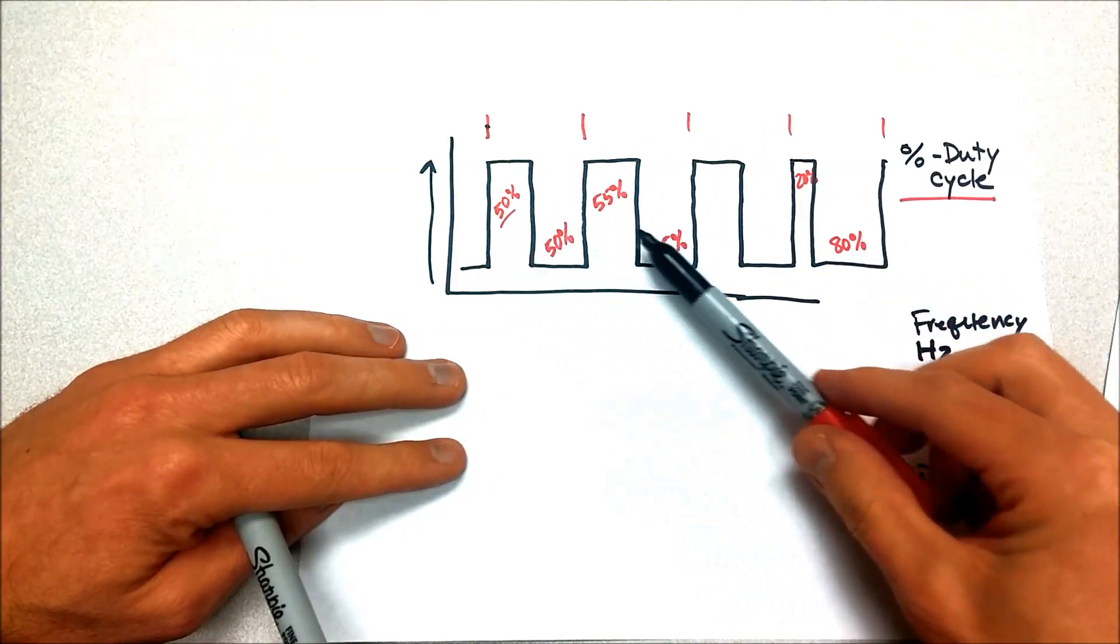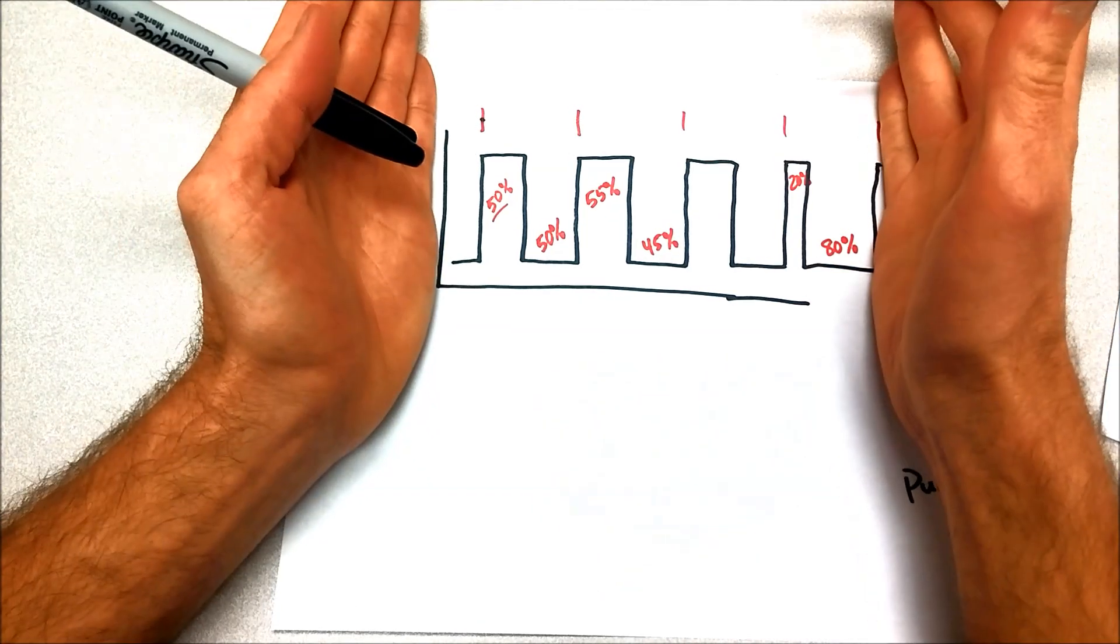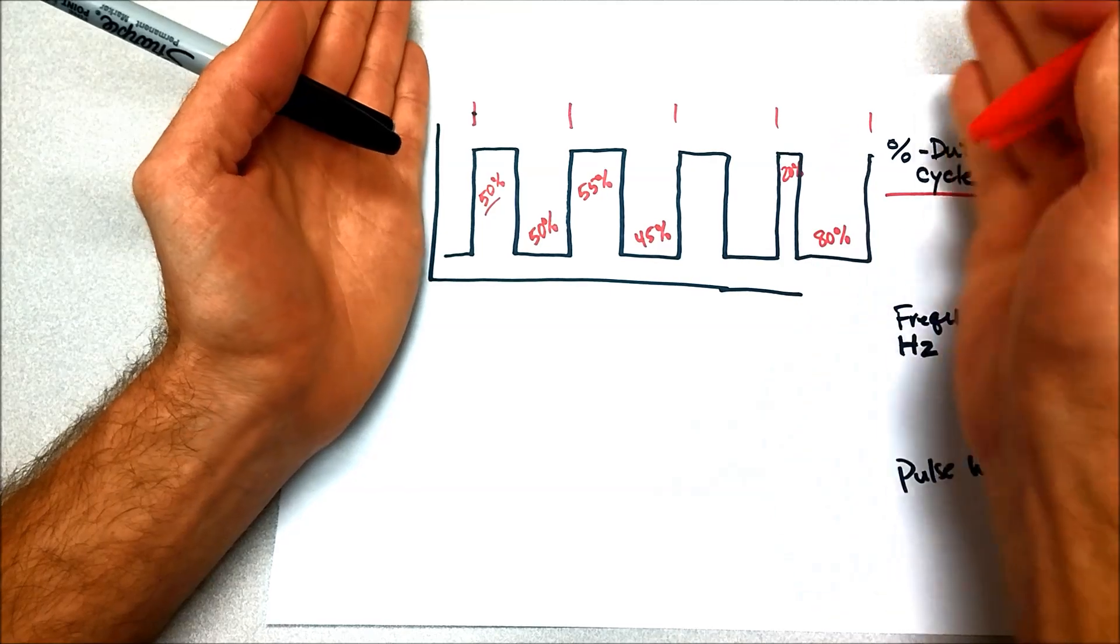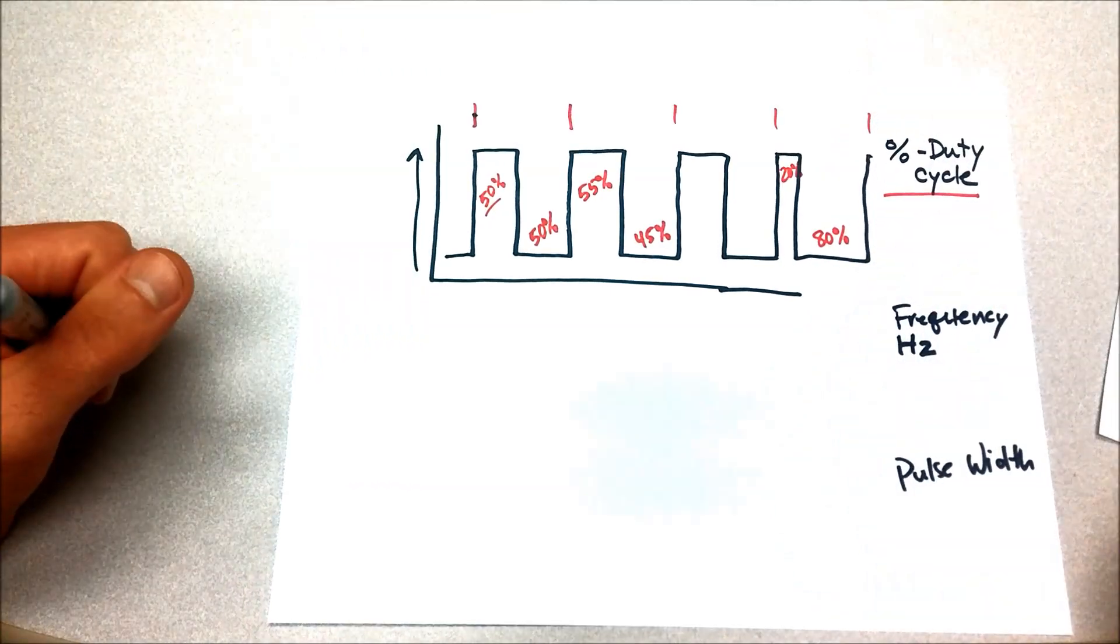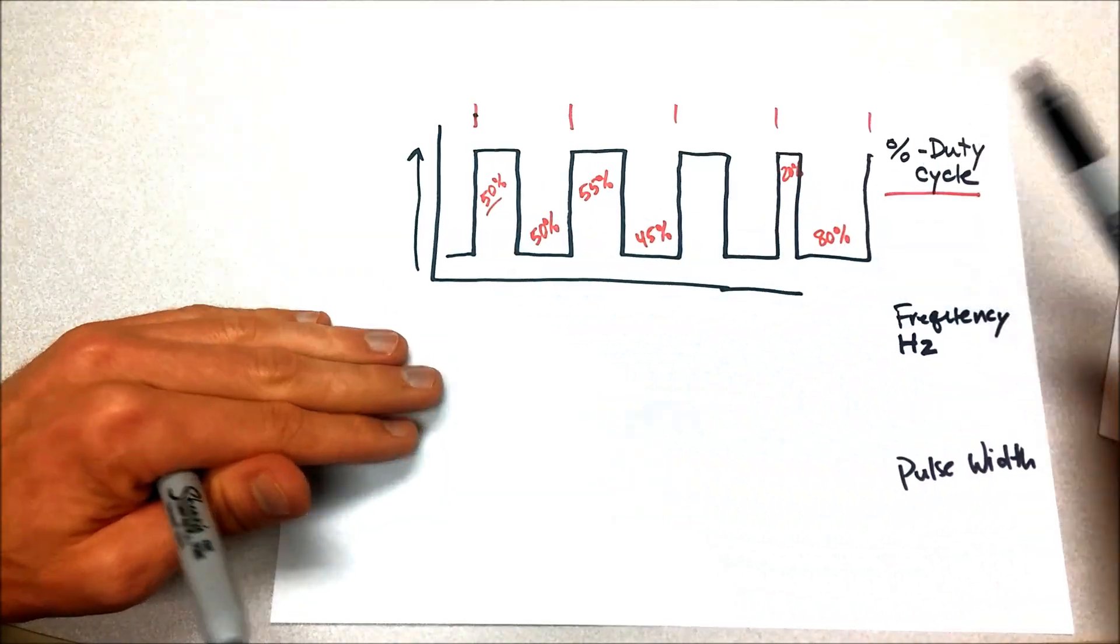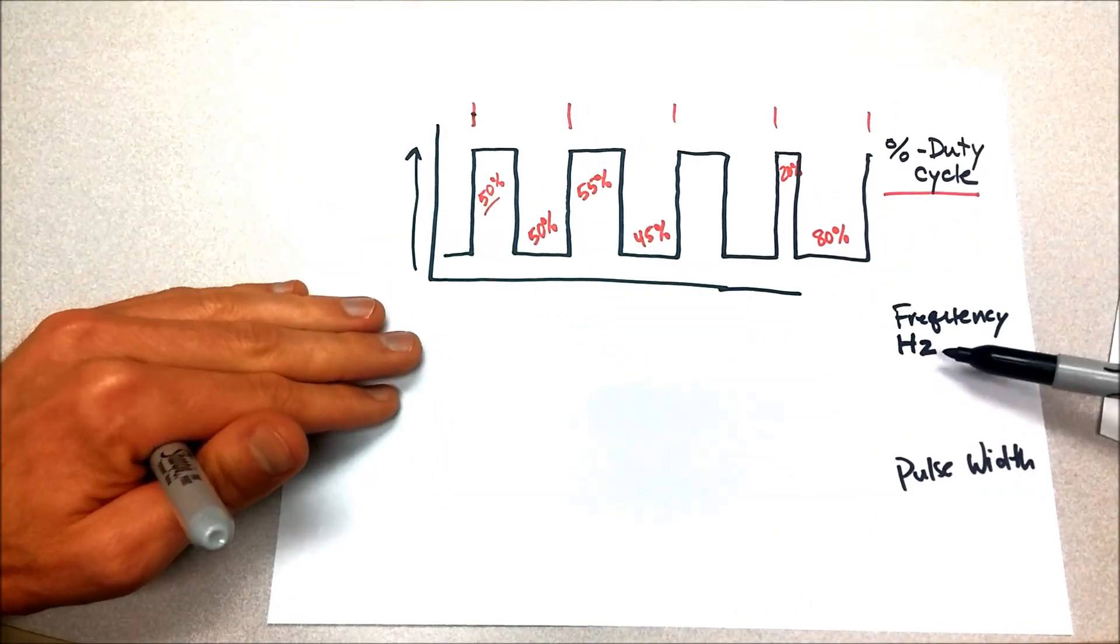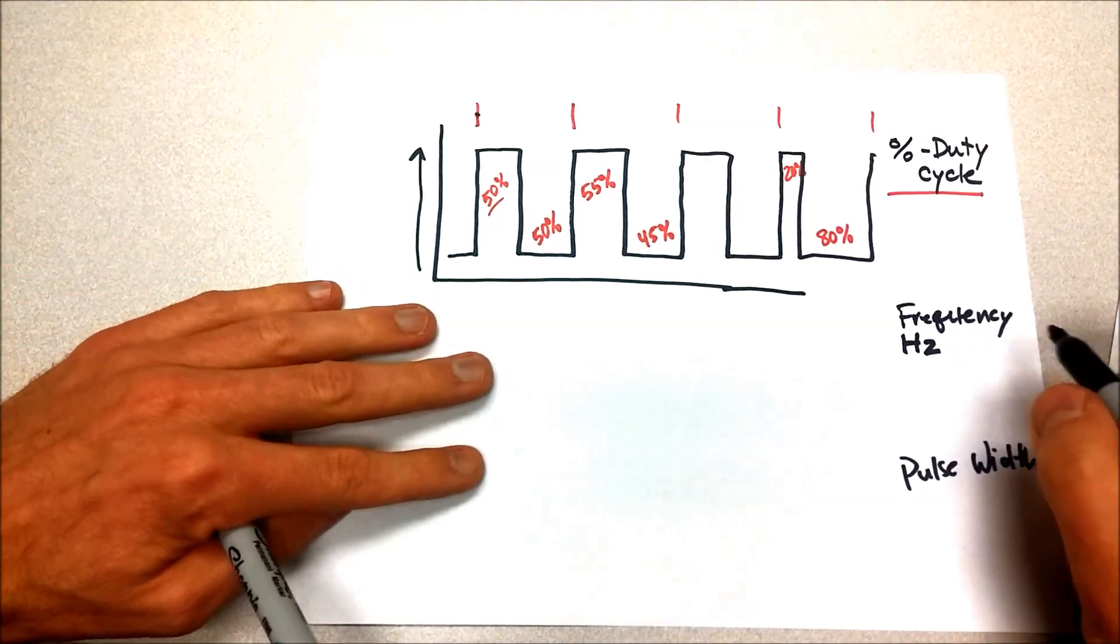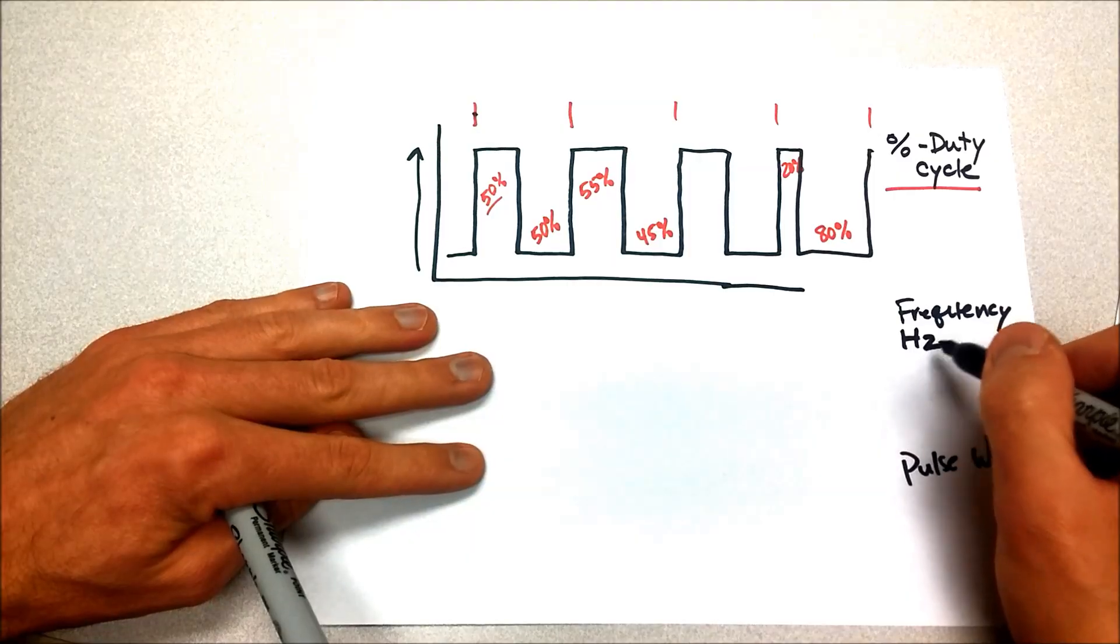So if we look at this, if this happened to be one second from here to here, we would say, well, we had one, two, three, four cycles per second. If it happened that there were 100 of those in a second, we would say it had 100 hertz or the frequency was 100 hertz, 100 cycles per second. So frequency is measured in cycles per second.